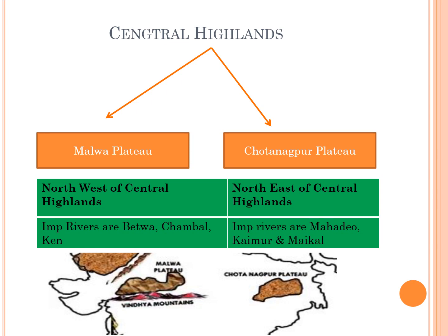Chotanagpur Plateau is located in eastern India. It extends into the states of Jharkhand, Odisha, West Bengal, Bihar and Chhattisgarh. The total area of the plateau is about 65,000 square kilometers. It is made up of three smaller plateaus — the Ranchi, the Hazaribag and the Koderma Plateaus. It is known to have some of the highest levels of mineral sources in India, with vast deposits of coal and metal ores. The important rivers in the Chotanagpur Plateau are Mahanadi, Kaimur and Maikal rivers.